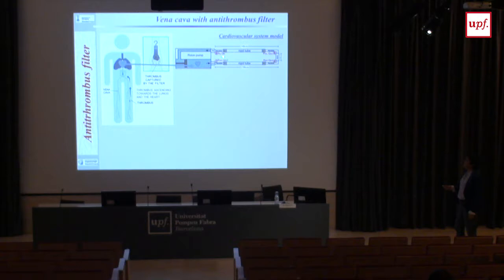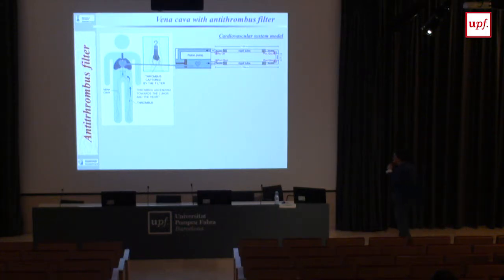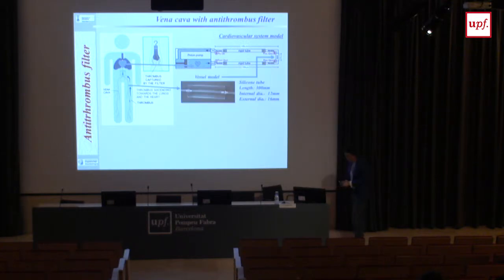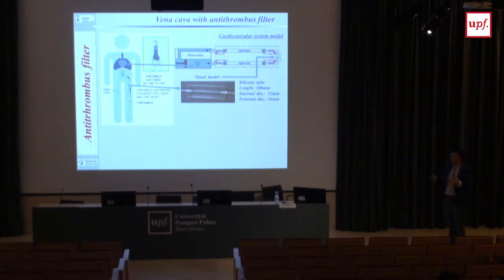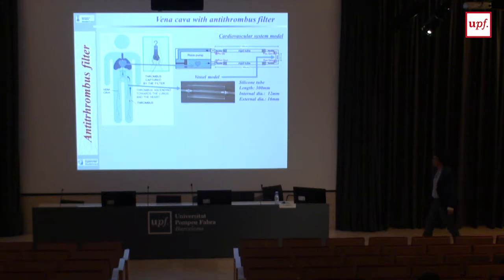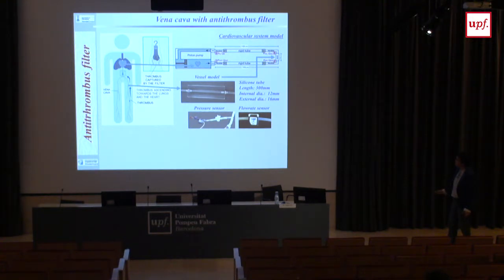We didn't know about the periodic pressure changes at first — it was a surprise for us, though fluid mechanics people already knew. The model for the vena cava was a silicon tube of a certain length and diameter — not a truly realistic vena cava, which is apparently much thinner, with more expansion and collapse under flow. But it was good enough for the simulation group. We measured pressures and flow rates using ultrasonic sensors that could be placed in and out without changing the circuit.